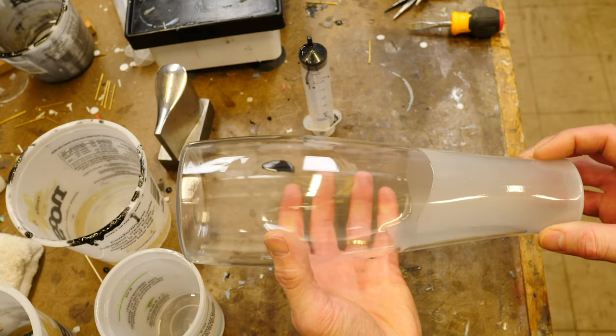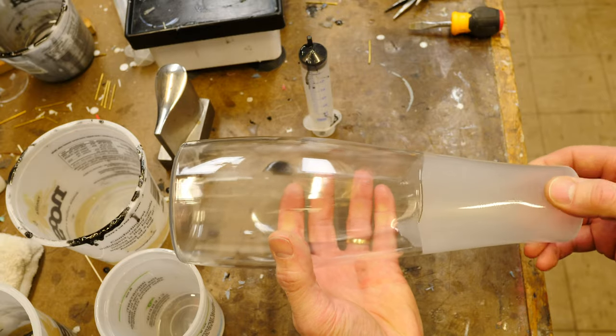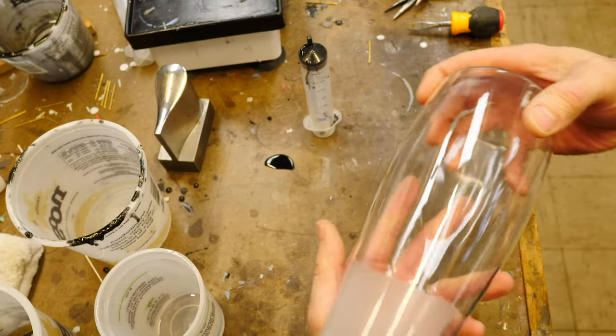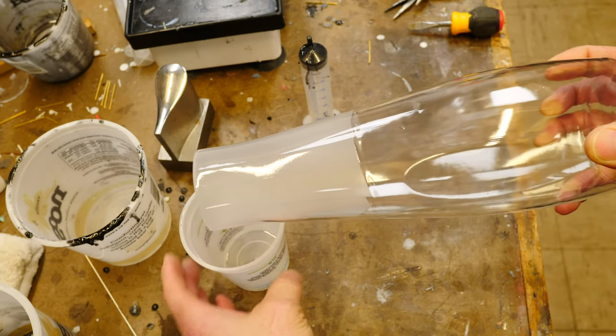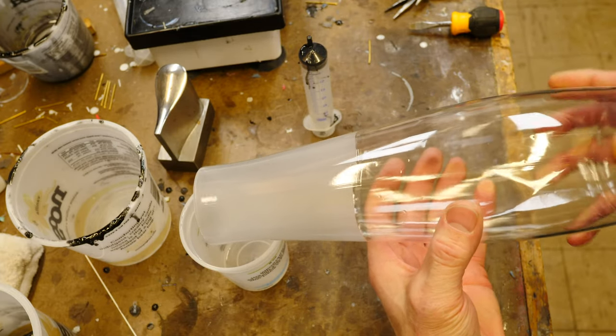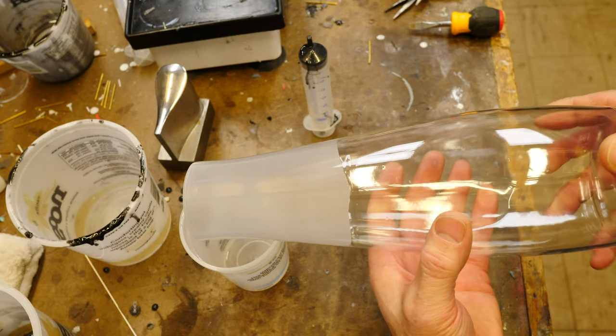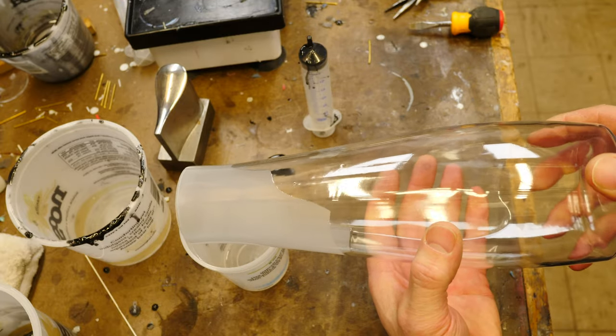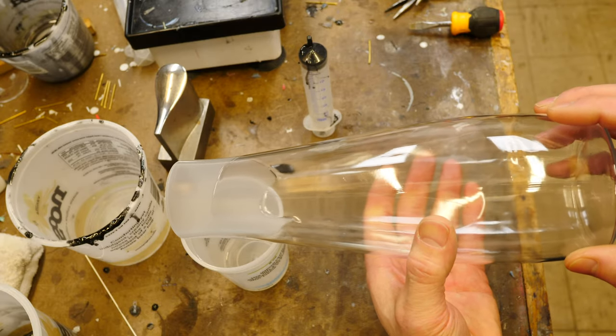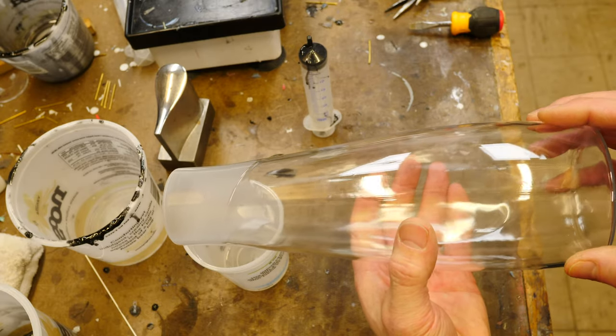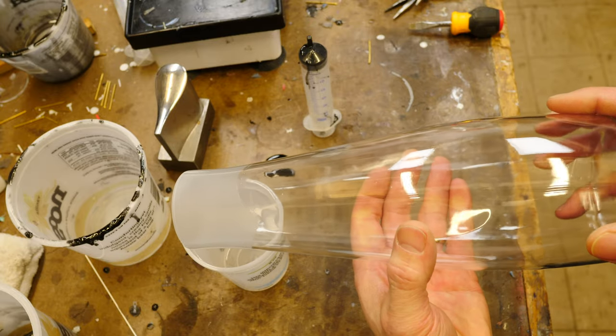Now, I slowly am turning the bottle so that the clear coat can work its way towards the opening of the bottle. It's pretty thick, so you can kind of work it a little bit. I would say it's the consistency of somewhere between milk and heavy cream, something like that.